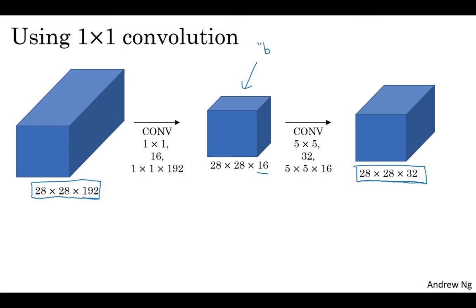Sometimes this is called a bottleneck layer. I guess because a bottleneck is usually the smallest part of something, right? If you have a glass bottle, the bottleneck is the smallest part of this bottle. In the same way, the bottleneck layer is the smallest part of this network, where you shrink the representation before increasing the size again.